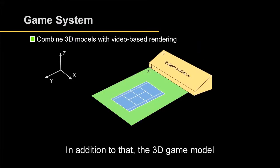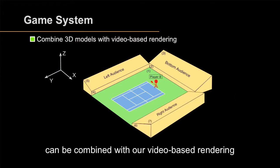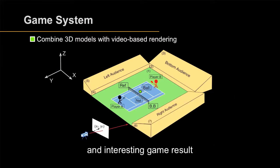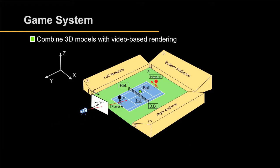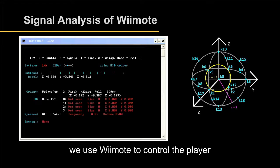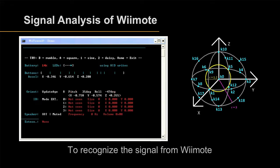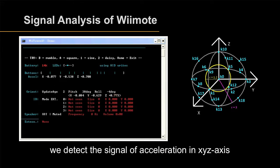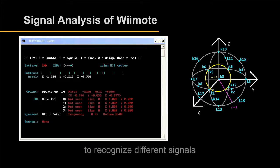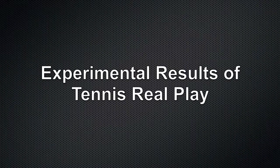In addition to that, the 3D game model can be combined with our video-based rendering, which provides more vivid visual effects and interesting game results. For the interface part, we use the Wiimote to control the player. To recognize the signal from the Wiimote, we detect the signal of acceleration in X, Y, Z axes as features of the input signal, and use an SVM classifier to recognize different signals. At the end of this video, rendering results of Tennis Replay and our live demo are shown.